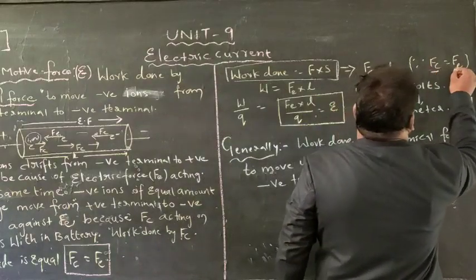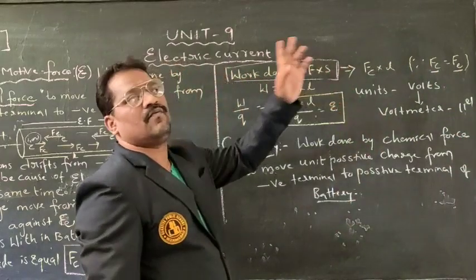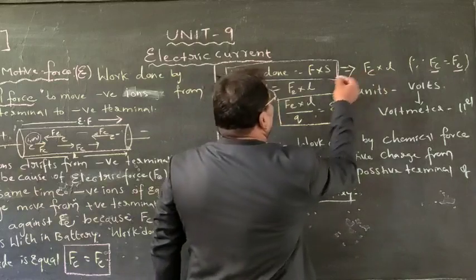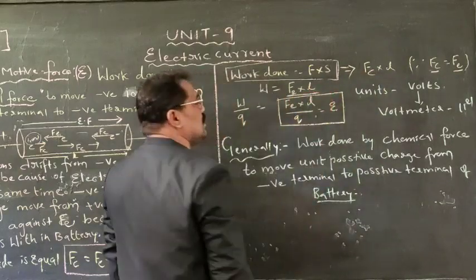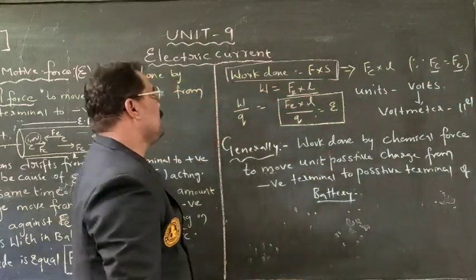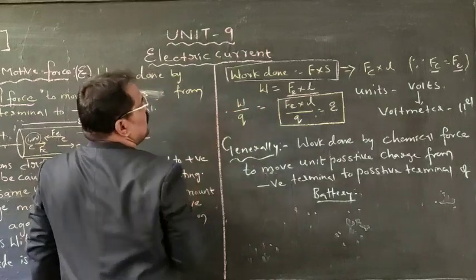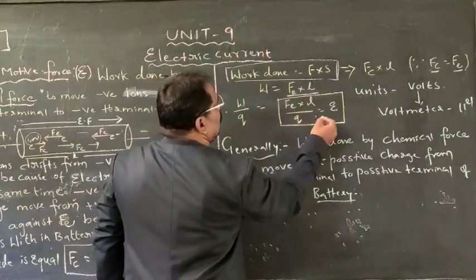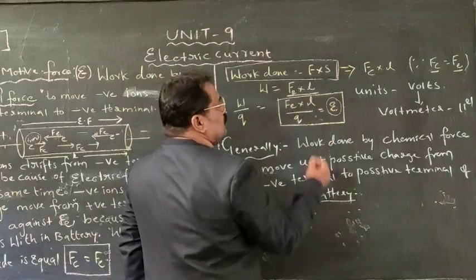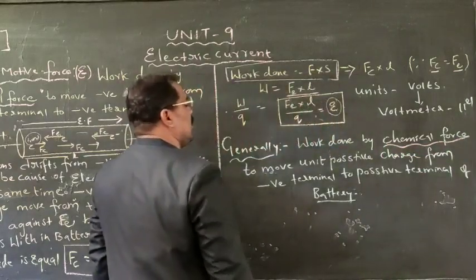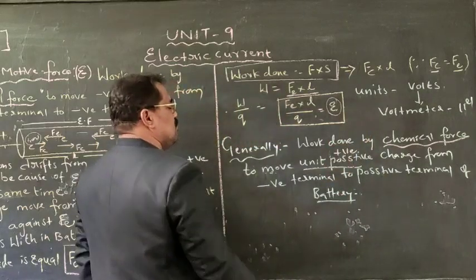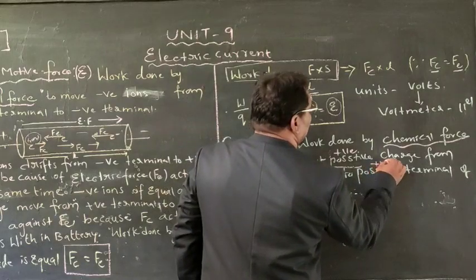We also know that chemical force is equal in magnitude to electric force. Therefore, Fc is equal to Fe. As both are equal in magnitude but acting against each other, if we go for work done per unit charge — Fe into L divided by Q — that is equal to electromotive force. Generally, electromotive force is work done by chemical force to move a unit positive charge from negative terminal to positive terminal.